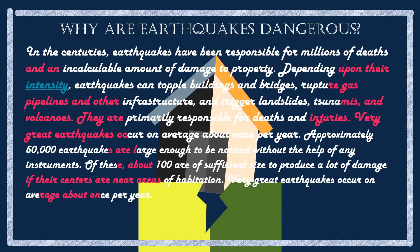Why are earthquakes dangerous? Over the centuries, earthquakes have been responsible for millions of deaths and an incalculable amount of property damage. Depending on intensity, earthquakes can topple buildings and bridges, rupture gas pipelines and other infrastructure, and trigger landslides, tsunamis, and volcanoes. Approximately 50,000 earthquakes per year are large enough to be noticed without instruments like a seismograph, and about 100 of those are large enough to produce significant damage near populated areas. Very great earthquakes occur on average about once per year.